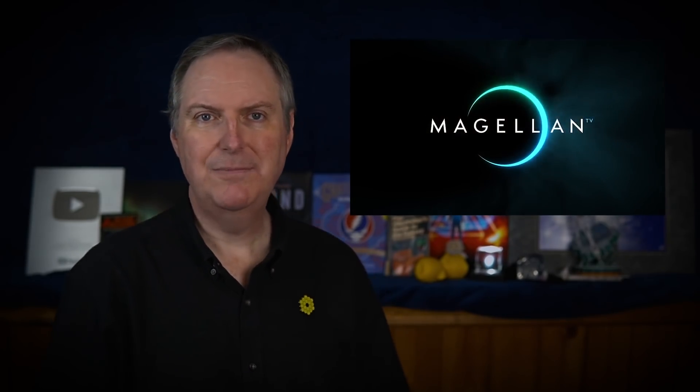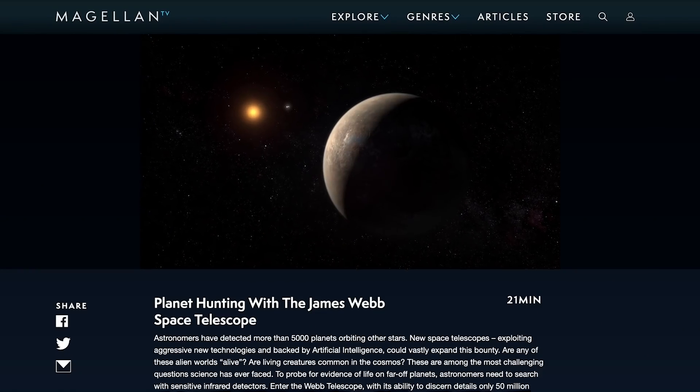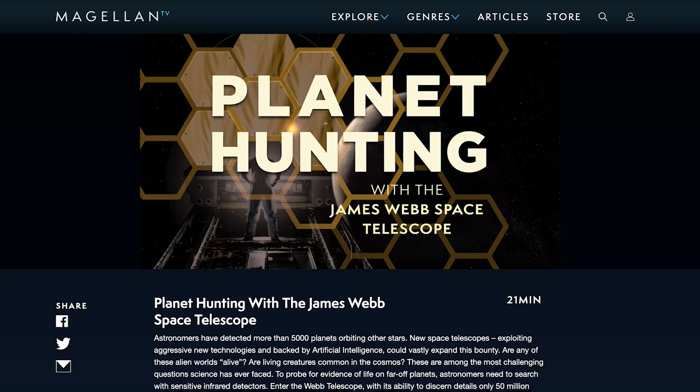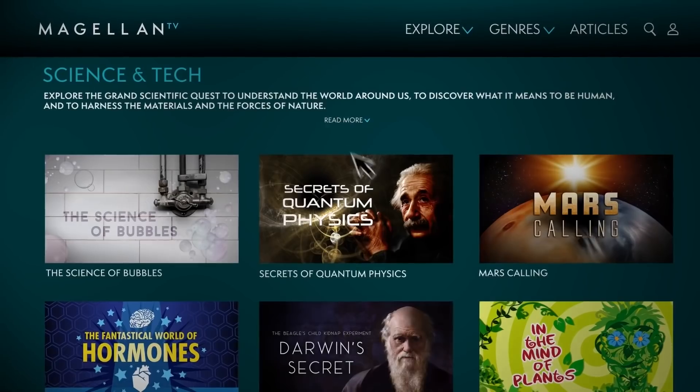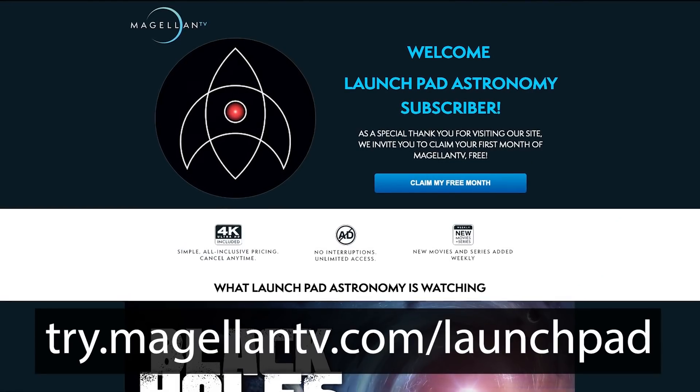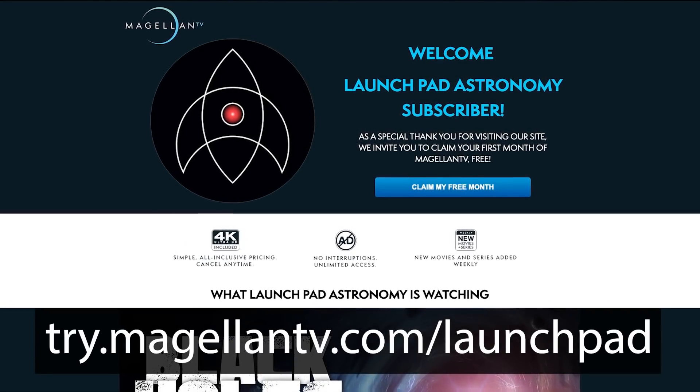But first, I'd like to thank MagellanTV for sponsoring today's video. Planet Hunting with the James Webb Space Telescope shows how Webb will explore the details of alien atmospheres in the neighborhood of our sun. It's just one of more than 3,000 documentaries available exclusively on MagellanTV. New documentaries and series about nature, history, science, and technology are added each week and are presented without commercial interruption. And now, Magellan is offering my viewers a full month of their award-winning content absolutely free. Just use the link in the description of this video.